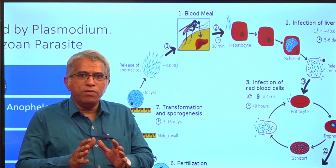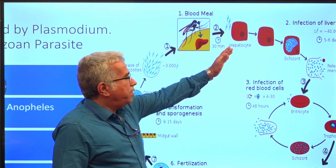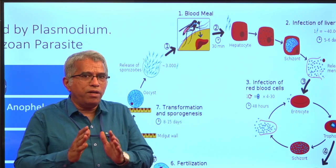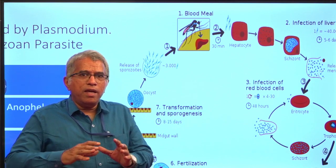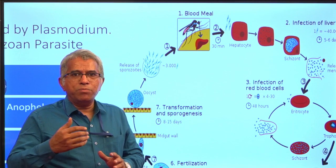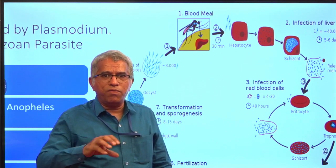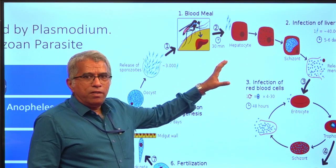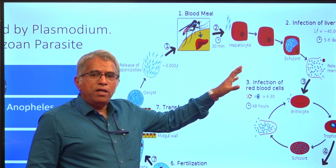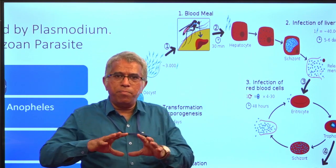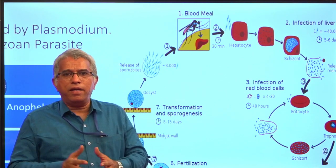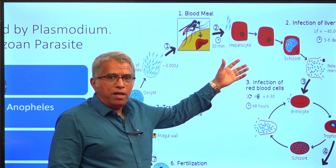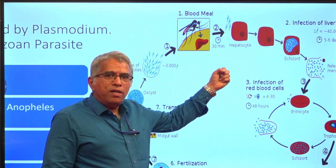These sporozoites, which are sickle-shaped, reach hepatocytes — that means they come to the liver. There they are transformed into schizont, which undergoes multiple fission. So in the liver, asexual reproduction takes place. During this hepatic cycle — hepato means liver — the hepatic cycle is the cycle taking place inside the liver, and during this cycle it feeds on liver cells.